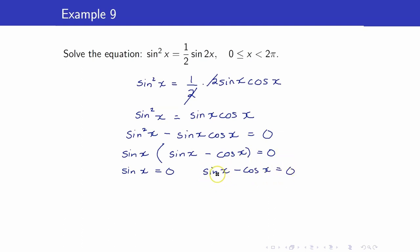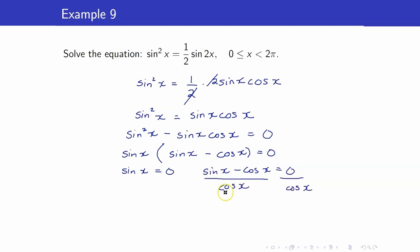We can set each factor to 0: sine x equals 0, and sine x minus cosine x equals 0. For sine x minus cosine x equals 0, we have two trigonometric functions. To remedy that, we divide both sides by cosine x. Sine x over cosine x is tangent x, and cosine x over cosine x is 1. So therefore, tangent x equals 1.